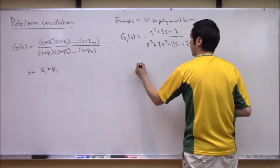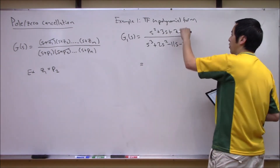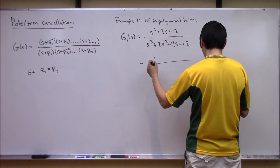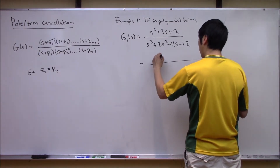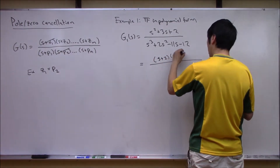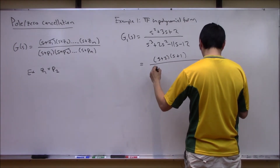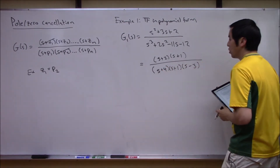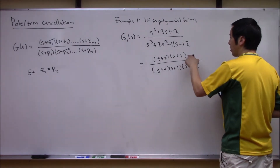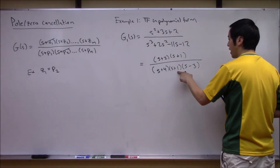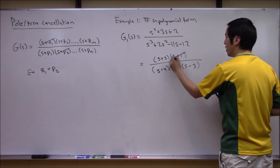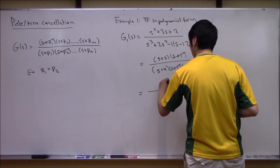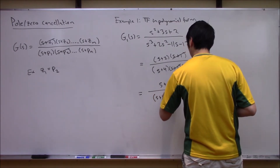Running over to Mathematica or any root-finding tool, we can solve for the roots of the numerator and denominator and factor this. The numerator factors as (S + 2)(S + 1), and the denominator as (S + 4)(S + 1)(S − 3). We can see there is a zero at S = −1 and a pole at S = −1, so these terms cancel, and the minimal realization should be (S + 2) / [(S + 4)(S − 3)].